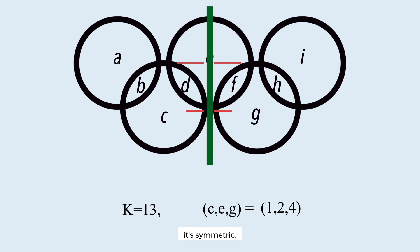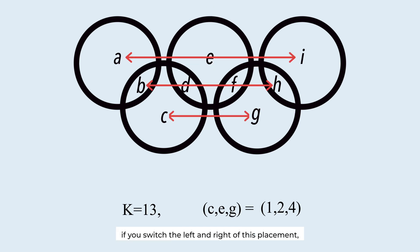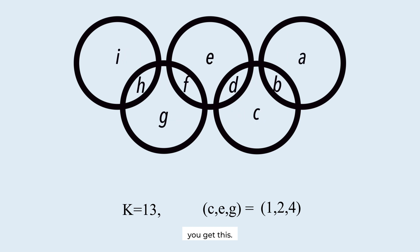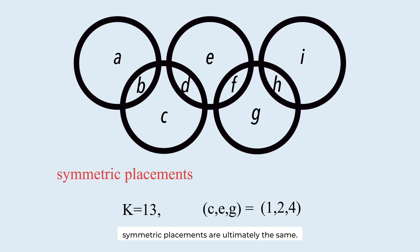Observe the Olympic rings. It's symmetric. If you switch the left and right of this placement, you get this. And switch again. It is the same as the original placement. Symmetric placements are ultimately the same. So the important number in this placement is E.